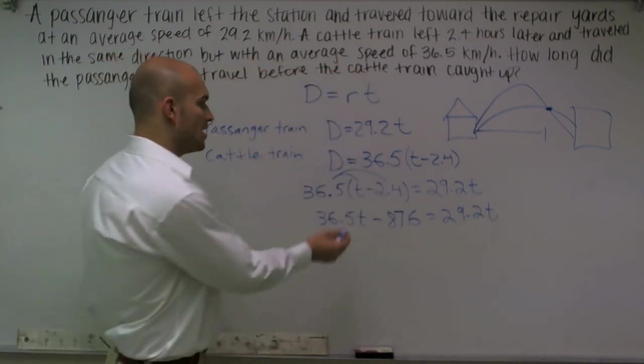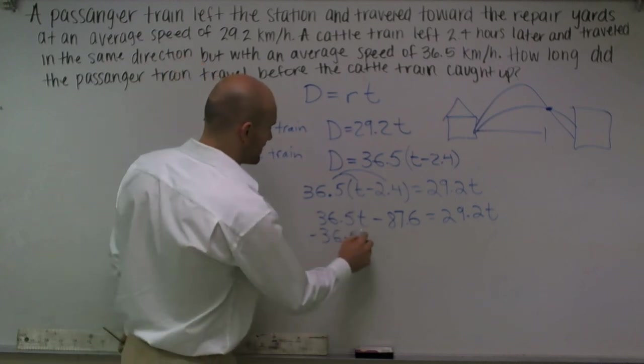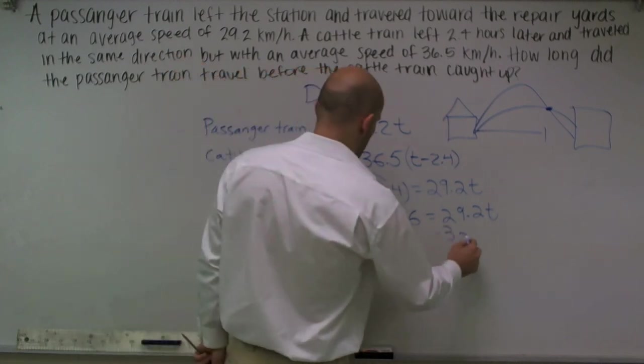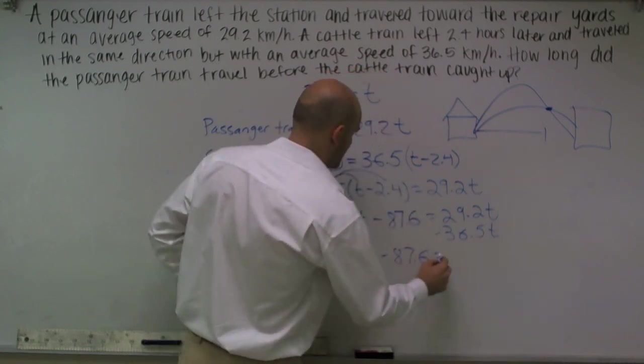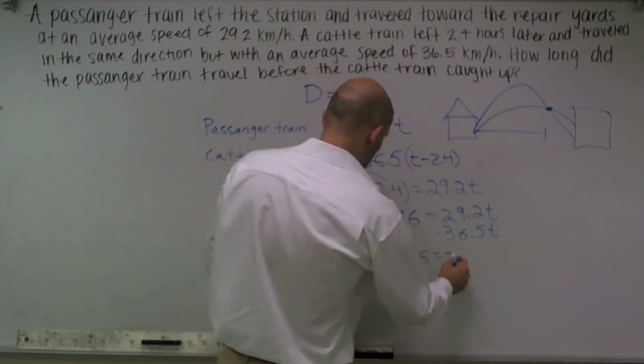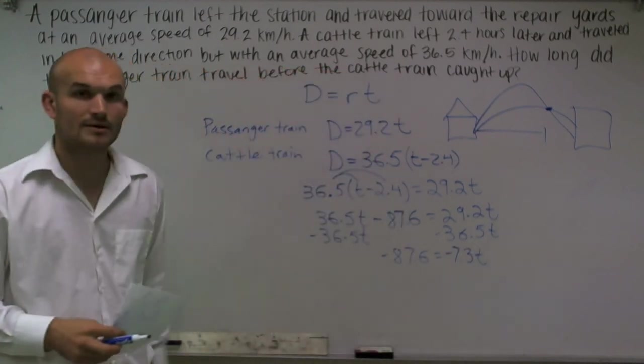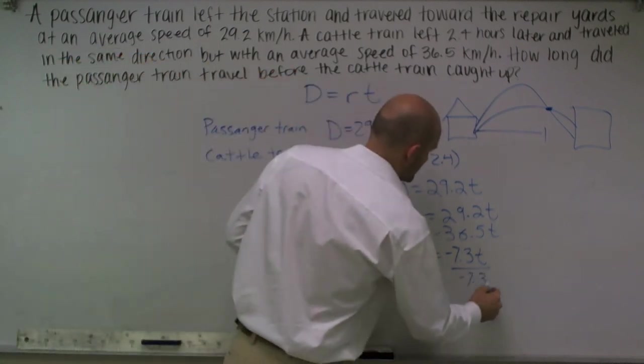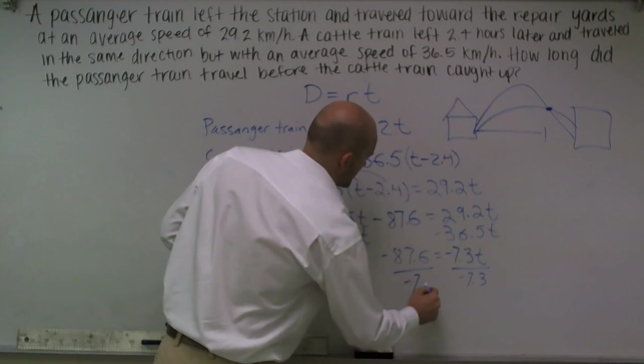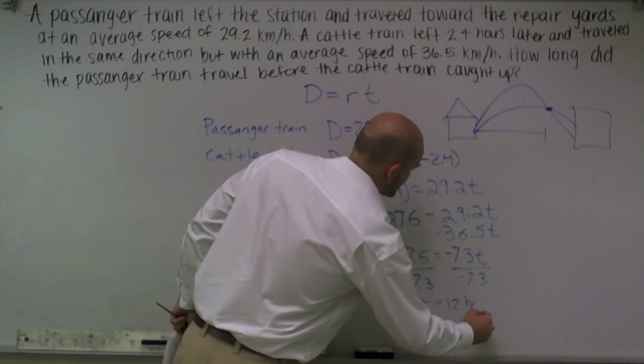So what I'm going to do now is just do a little algebra and set this up. If I use my distributive property, I get 36.5T minus 87.6 equals 29.2T. Then what I'm going to do is now I'm going to get my variable on the same side, so I'll subtract the 36.5T from both sides. I get negative 87.6 equals a negative 7.3T. Now when I solve for T by dividing by negative 7.3, I get T is going to equal 12 hours.